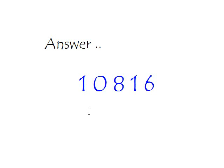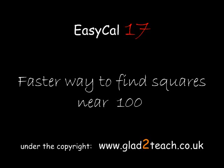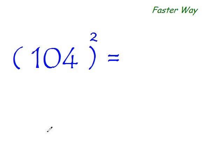Now let me show you the easy-cal trick for finding the squares of numbers the faster way. To find the square of 104 the faster way, all you need to do is add this 4 to this entire number. So what is 4 plus 104? It is 108.